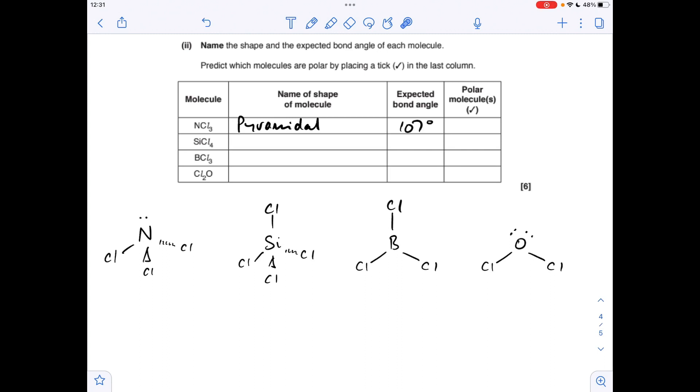Is the molecule polar? Well, that's down to whether the molecule's symmetrical or not. NCl3 is not symmetrical because of the lone pair, so the dipoles don't cancel out, and therefore it is polar. Moving on to SiCl4, the name of this shape is tetrahedral. We've got four bonding regions and no lone pairs, so it's 109.5. This molecule's totally symmetrical, so all the dipoles cancel, so it's non-polar.